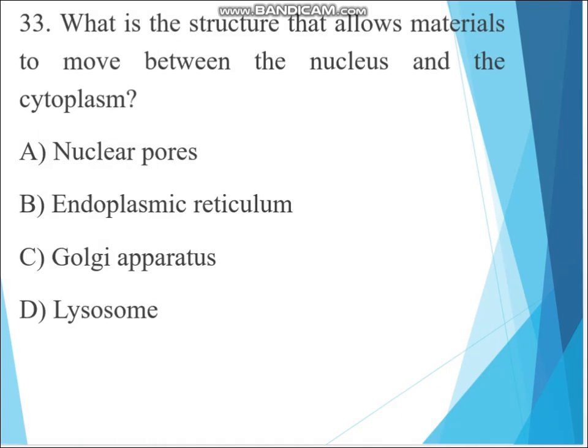Question 33. What is the structure that allows materials to move between the nucleus and the cytoplasm? A. Nuclear pores, B. Endoplasmic reticulum, C. Golgi apparatus, D. Lysosomes. The answer must be nuclear pores, is the channel in nuclear membrane for materials exchange. The answer is A.